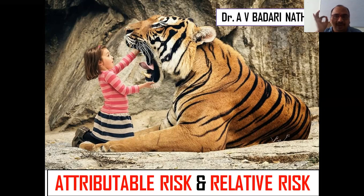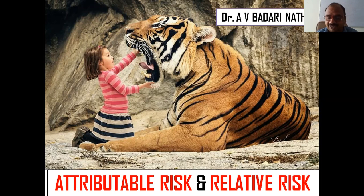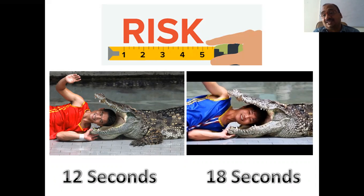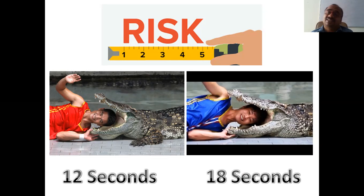Keep in mind these two terms: attributable risk and relative risk. Both are used to measure how much risk we are taking. See the diagram — the baby is taking much risk. Is it possible to measure risk? Yes, it is possible, but there are specific units — not length like centimeters.